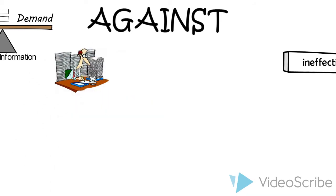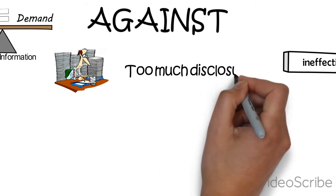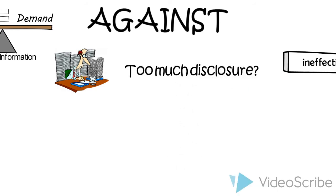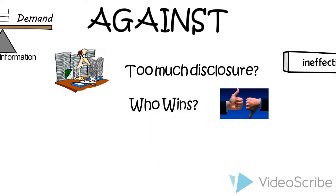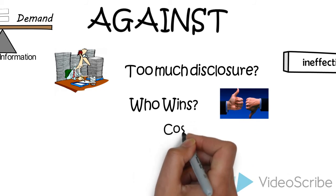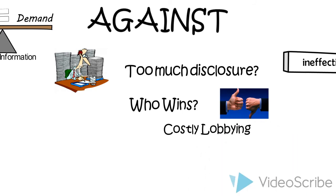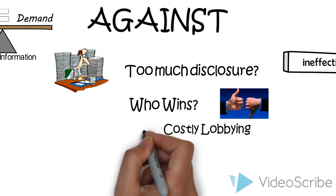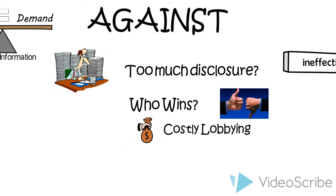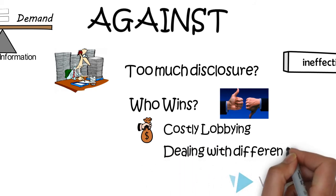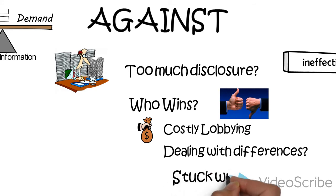The arguments against regulated accounting disclosure include that it leads to too much disclosure. Without the discipline of the market to determine the optimal amount, who decides? Regulation conveys benefits to some and imposes costs on others — those with the most to win or lose will try to influence the process. This is called lobbying, and it can be expensive and lead to regulation that is biased toward the group that can lobby the hardest. Furthermore, it is difficult to create regulation appropriate for every type of organization, and once in place, it is difficult to remove.